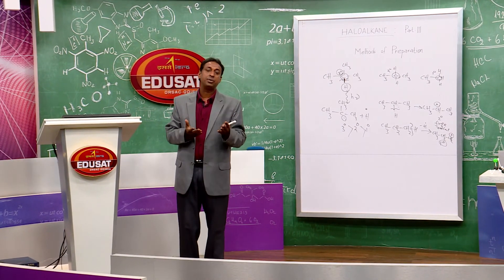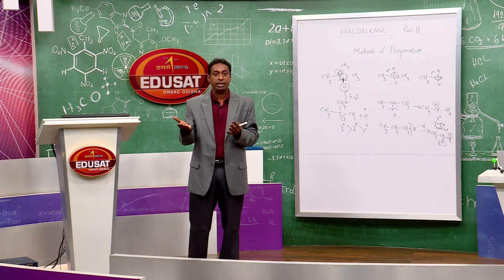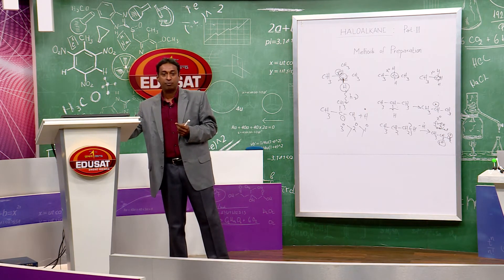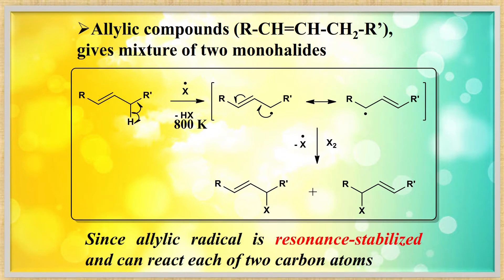This allylic halogenation takes place at high temperature — more than 700 K — because the allyl free radical is more stable than 3°, which is more stable than 2°, which is more stable than 1°.